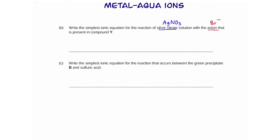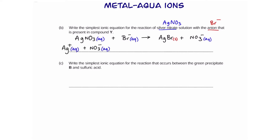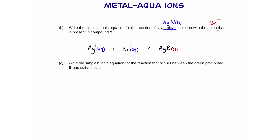Silver nitrate is AgNO3 and the anion was Br⁻. When silver reacts with bromide, we get silver bromide and nitrate — bromide simply takes the place of the nitrate ion. Writing the ionic equation, we break down all ionic compounds: Ag⁺ + NO3⁻ on the left, and AgBr (solid, not broken down) + NO3⁻ on the right. Cancelling nitrate from both sides gives the final ionic equation: Ag⁺(aq) + Br⁻(aq) → AgBr(s).